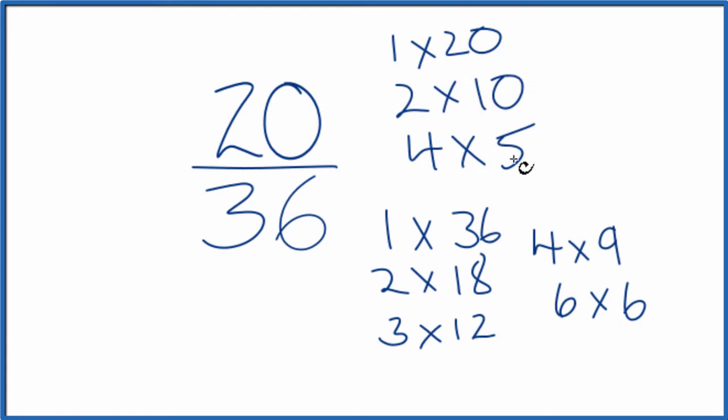When I look at the factors of 20 and 36, I'm looking for the greatest common factor, and it looks like the largest number that goes into 20 and 36 is going to be 4 right here. So we divide 20 by 4 and 36 by 4, and we'll have simplified 20/36.